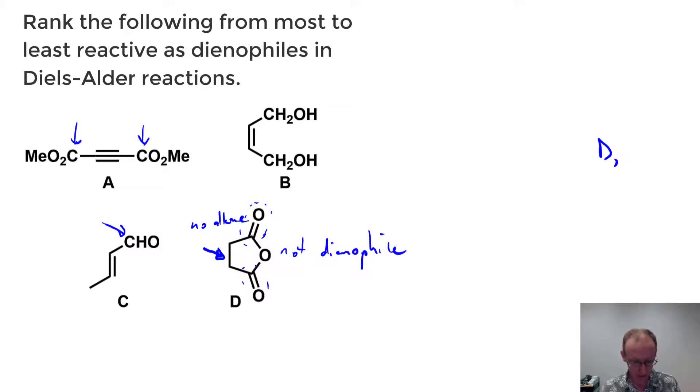However, what about B? We've got two groups on that double bond but what do they look like? So B looks like this. Now the groups attached to that double bond are not conjugated. There's no pi system conjugated to that double bond. So these are just alkyl groups that happen to have hydroxyl groups attached to them. It may be inductively electron withdrawing, but it's not nearly as powerful an effect as having a carbonyl group that can be conjugated to the double bond. So that is not an activated dienophile.